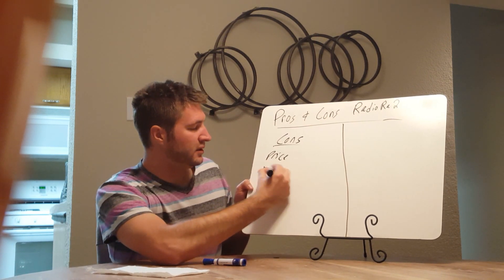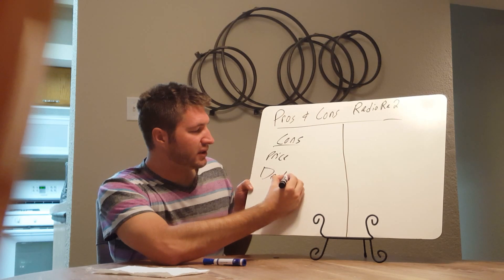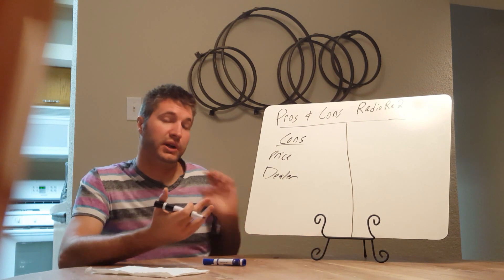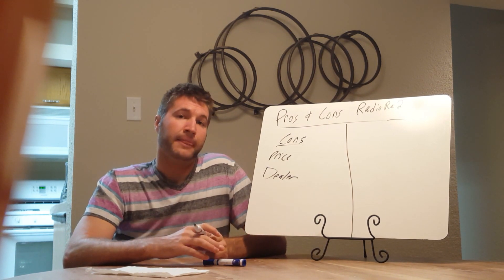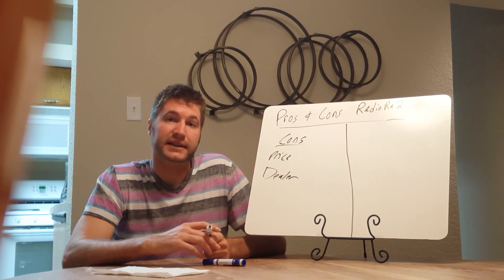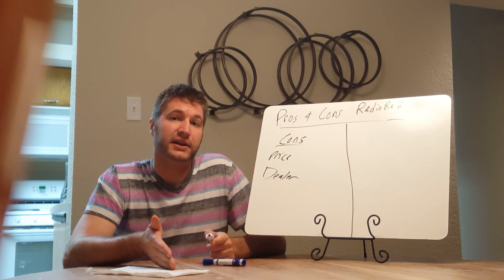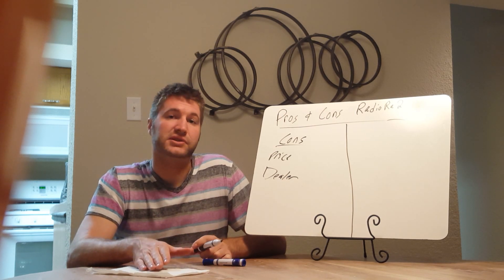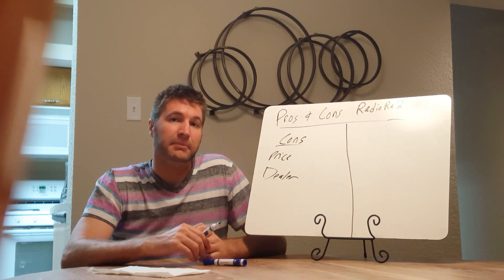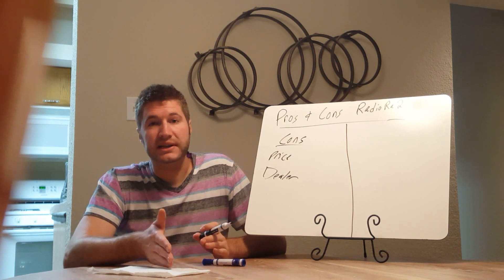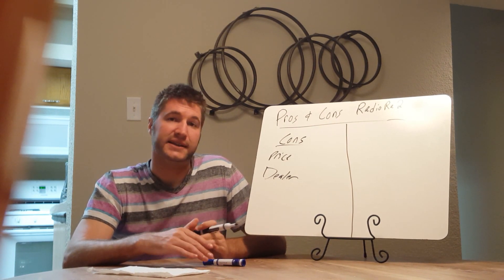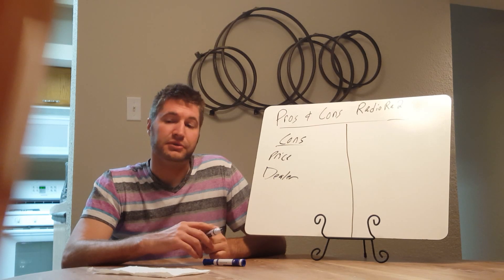The next one is you need to be a dealer with Lutron in order to get their software to program the RadioRA 2 devices. If you know a dealer, it's possible to do it yourself, but it's all proprietary and it's really not made for do-it-yourselfers. They want dealers to come in and install that. If you are an integrator, it's very easy to become a dealer. Just get with Lutron, do some online courses, take a test, and then you get certified to use their software.